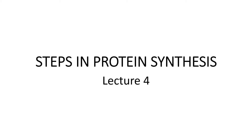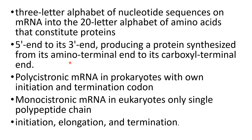This is our fourth lecture on translation, covering the different steps involved in protein synthesis in both prokaryotes and eukaryotes. Protein is almost always synthesized from the amino terminal to the carboxyl terminal, and the messenger RNA is always read from 5 prime to 3 prime end. This directional reading of mRNA produces the polypeptide chain from amino terminal to carboxyl terminal.